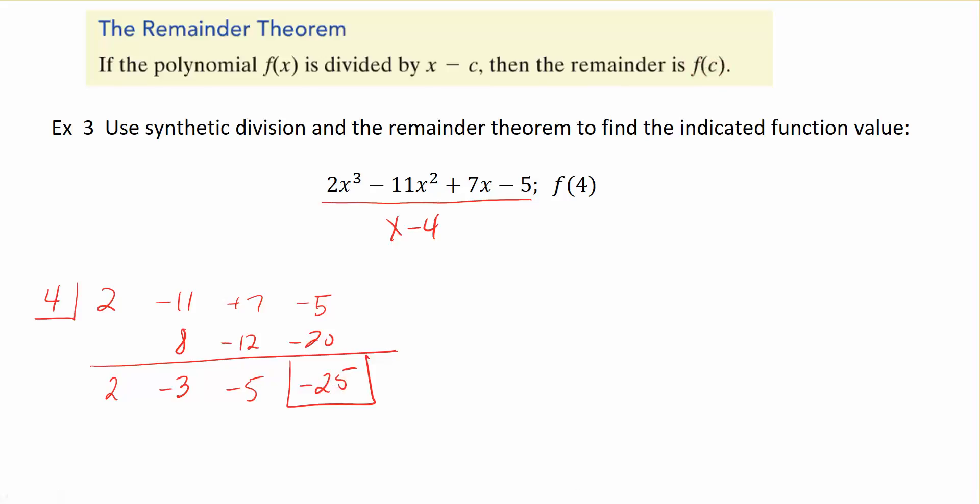So to sum that up, it says that when I did the division here of x minus 4, I evaluated the function at 4, and that's equal to negative 25. So synthetic division and the remainder theorem allows me to evaluate the function at a particular value, and the remainder that we found is the function evaluated at 4, which gives me negative 25.